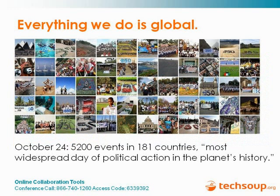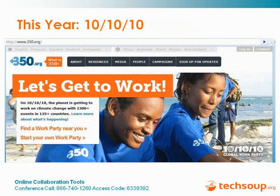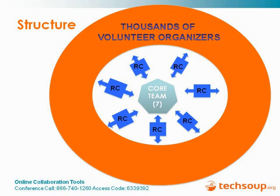Last year we organized an International Day of Climate Action with over 5,200 offline events — rallies, teach-ins, concerts, lobbying sessions — in 181 different countries, which is pretty much all the countries there are. This year we are doing a similar day of events focused on implementing climate solutions: solar panels, community gardens, and wind turbines, while also strategically exerting pressure on political leaders. To pull off these large-scale global events, we have an unconventional structure: a core team of seven, regional coordinators, and a large circle of volunteer organizers who do the hard work of outreach and education in their communities.